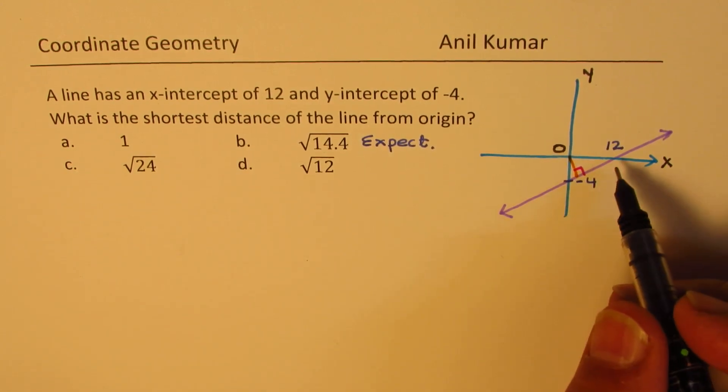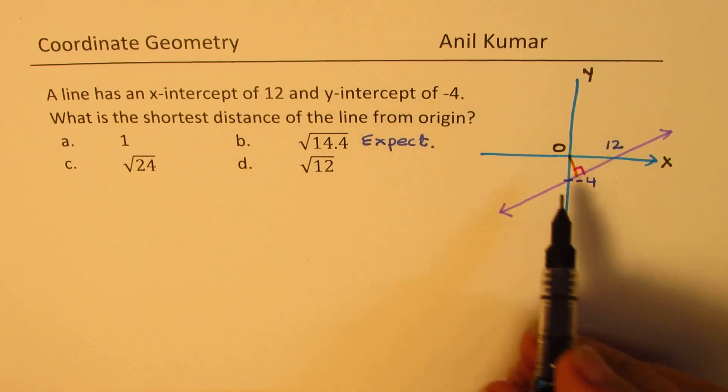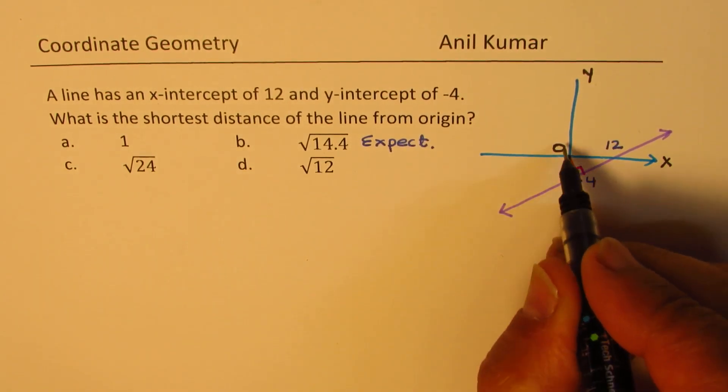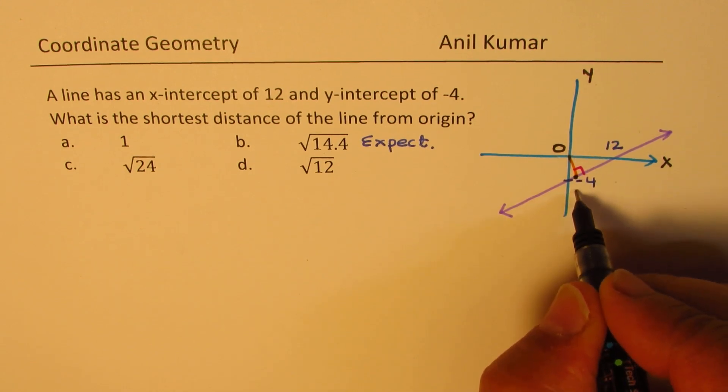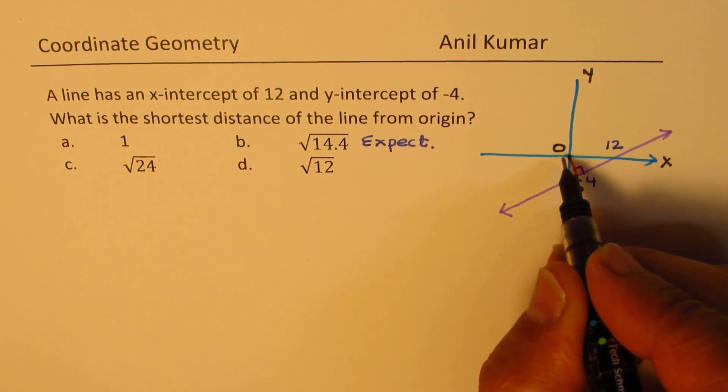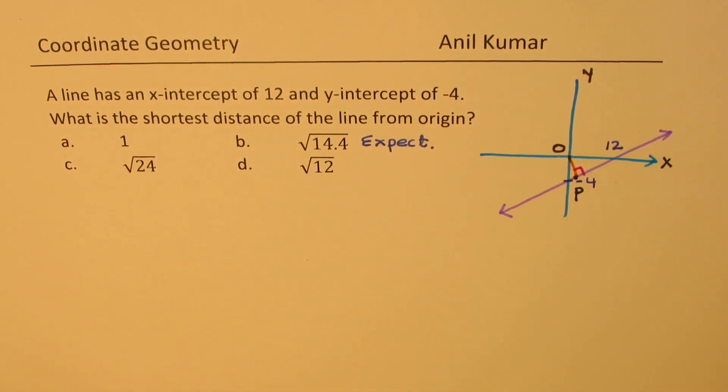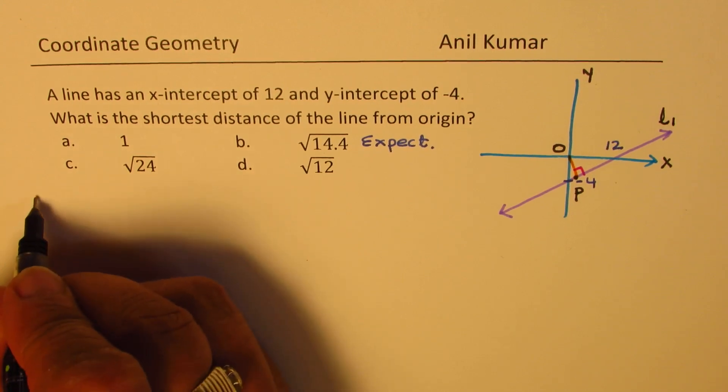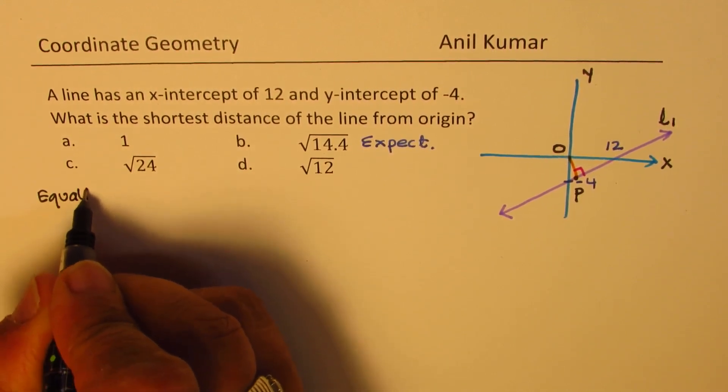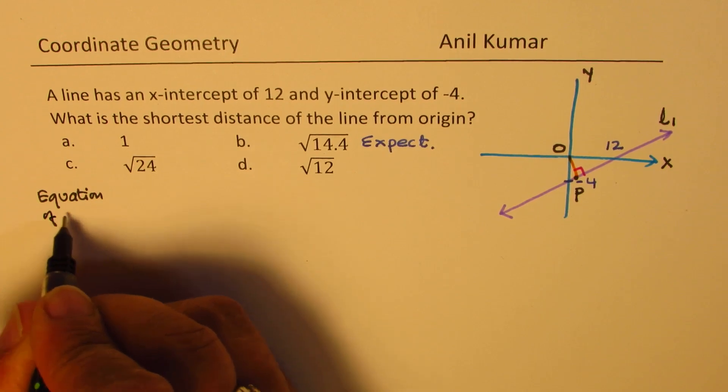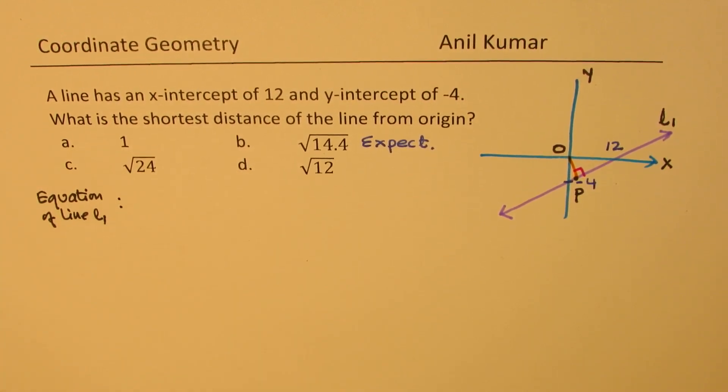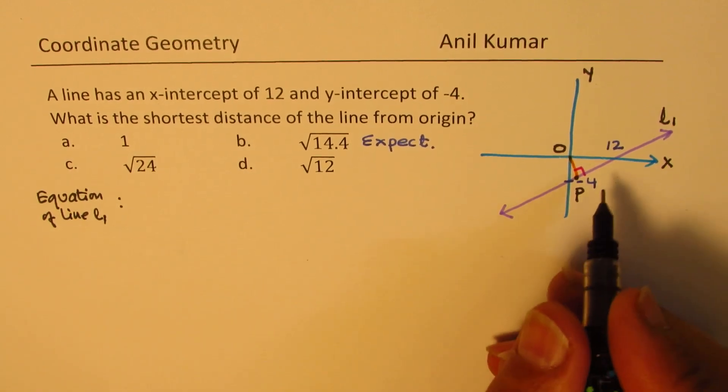So, first step will be, we are given these two points, to find this point of intersection from O to this point. Let's call this point as P. So, once we know OP, we can find the length. How do we get OP? So, let's say line is L1. Let's find equation of line L1. For that, we need slope and a point.